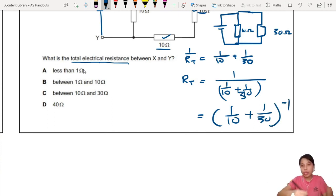Anyhow you want to do it, you can do that. So if you calculate everything correctly you should get 7.5 ohms.